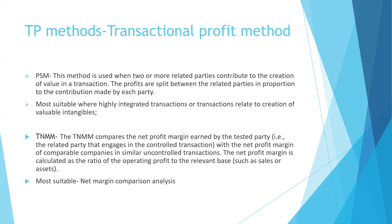The relevant base has to be an item which is not impacted by the related party transaction. For example, if the transaction being tested relates to the sale of goods, the relevant base taken should be operating expenses and not sales, because sales will be the tainted item. TNMM is most suitable for a net margin comparison analysis.